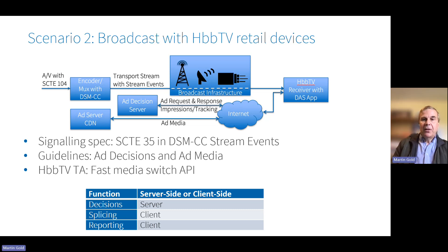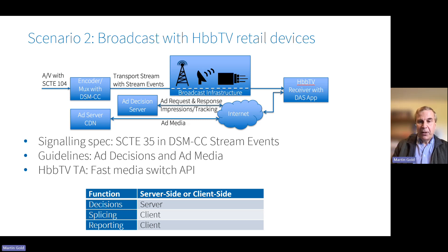In this second scenario, the target receivers are HbbTV devices — either smart TVs or set-top boxes. As mentioned earlier, the appropriate signalling for these uses DSMCC stream events. The HbbTV implementation needs to support the HbbTV targeted advertising specification, which adds a fast media switch API enabling the HbbTV app to manage the splicing between broadcast and ad. The communication with the ad decision server and subsequent reporting is performed by the app following the DVB guidelines. The split between server and client side operations is the same as in the previous scenario.